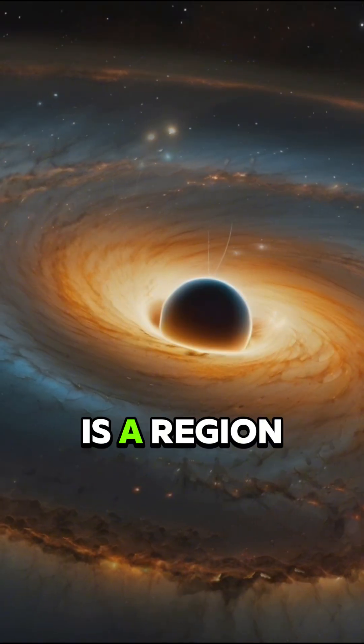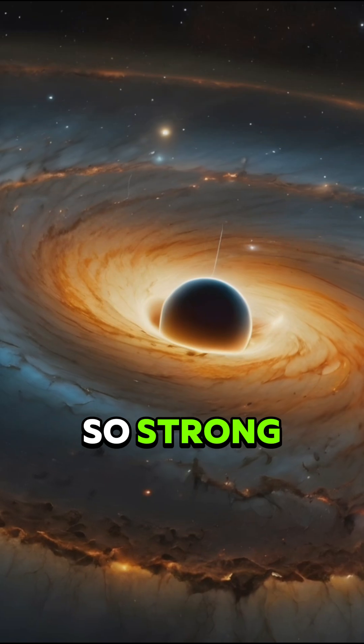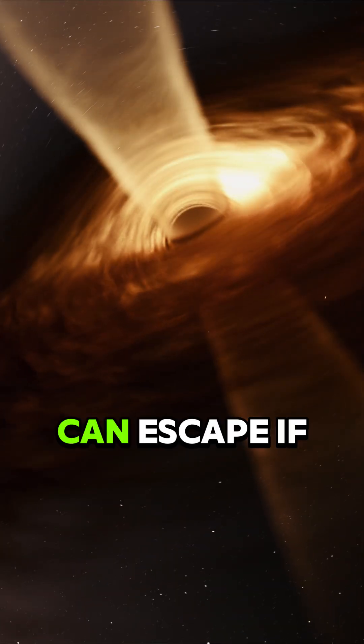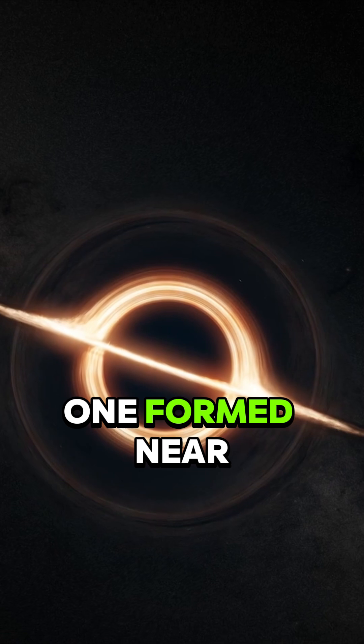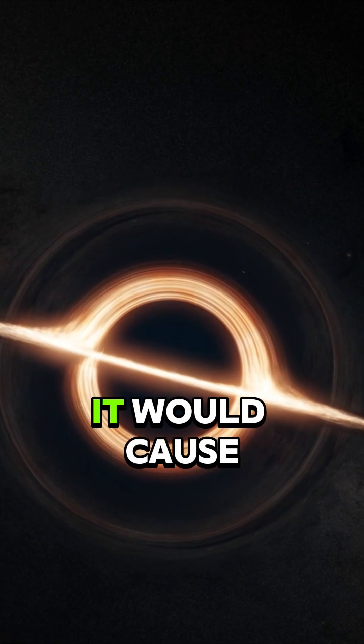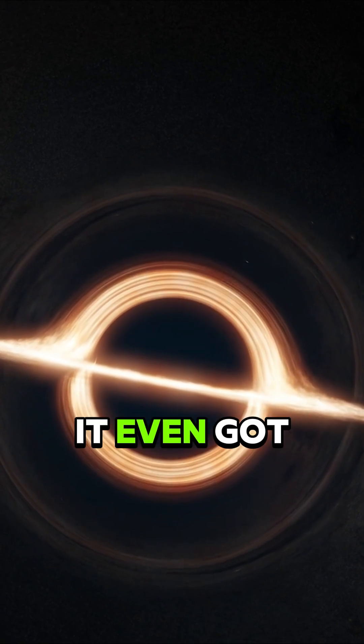A black hole is a region where gravity is so strong that nothing, not even light, can escape. If one formed near our solar system, it would cause chaos long before it even got close.